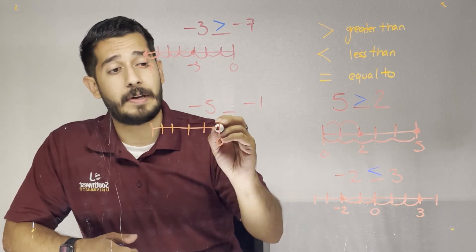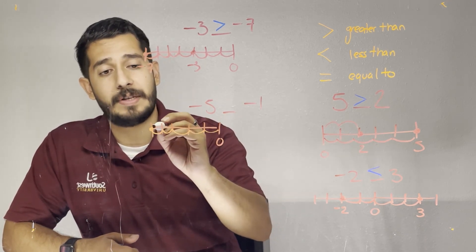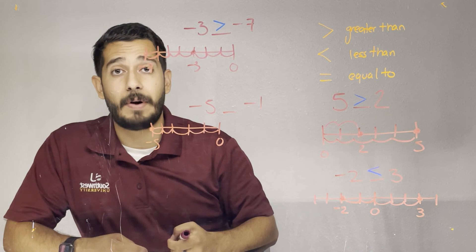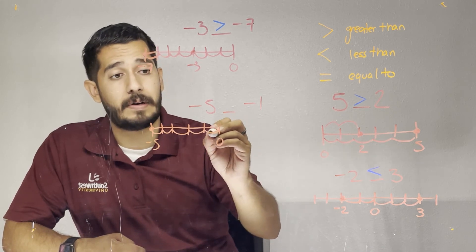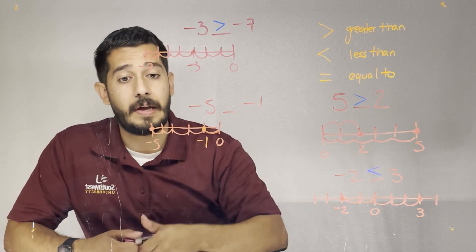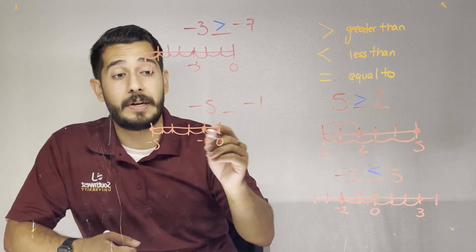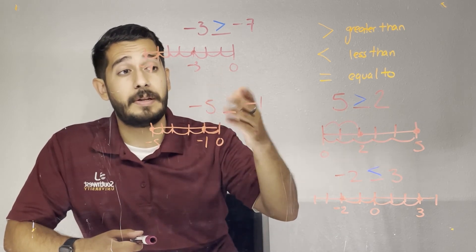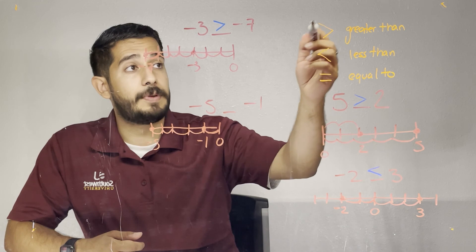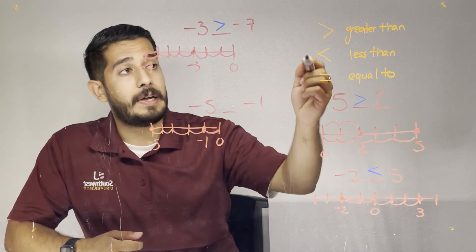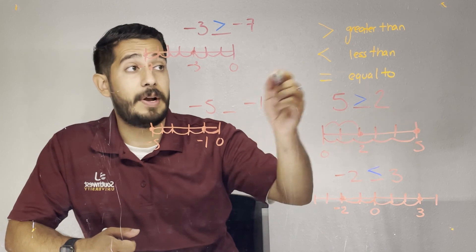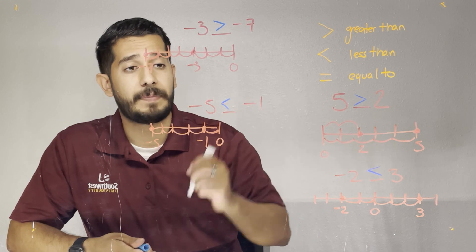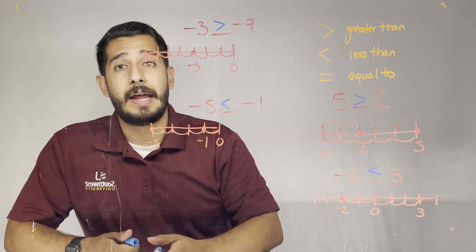Let's find the first number, which is negative five — it means I walk to the left five units, and that's where my negative five lies. I have to find negative one in the same line, which is just walking one unit to the left. By inspection, I know that negative one is farthest to the right, so this is the greatest number. The symbol has to have the greatest opening towards the negative one. Out of the two symbols, the only one with the opening towards negative one is the less than symbol — that is the correct sign. Negative five is less than negative one.